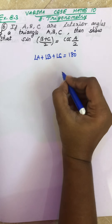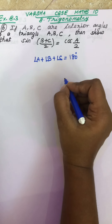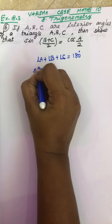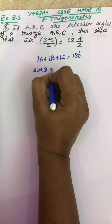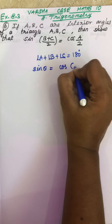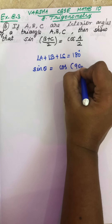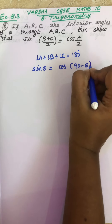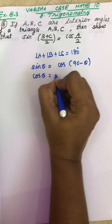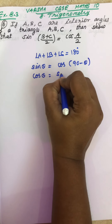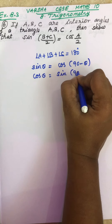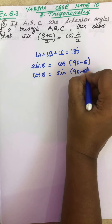Write the formula first. The formula is: sin θ = cos(90° − θ) and cos θ = sin(90° − θ).